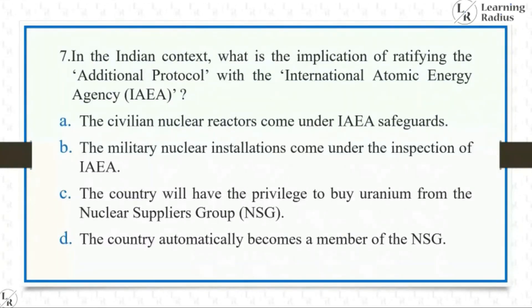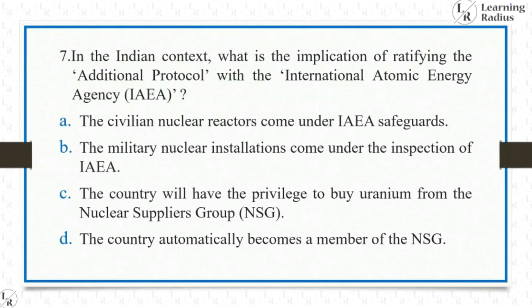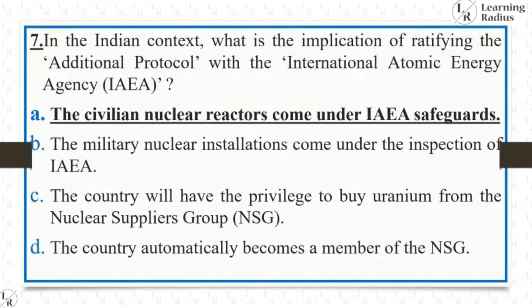In the Indian context, what is the implication of ratifying the additional protocol with the International Atomic Energy Agency? The options are: civilian nuclear reactors come under IAEA safeguards; military nuclear institutions come under IAEA inspection; the country will have the privilege to buy uranium from the Nuclear Suppliers Group; or the country automatically becomes a member of the NSG. Reading the statement carefully, civilian nuclear reactors coming under IAEA safeguards is the right answer.